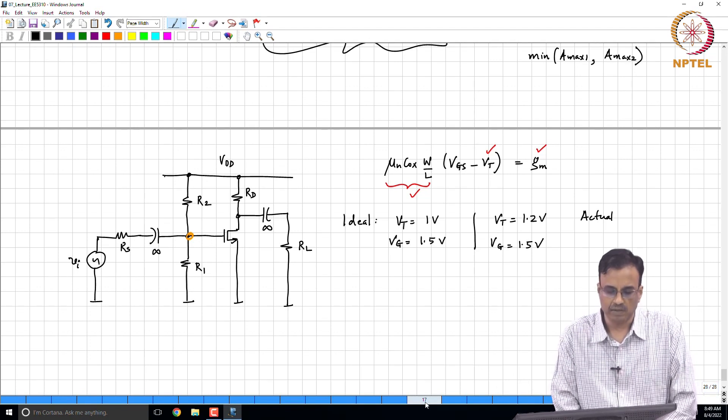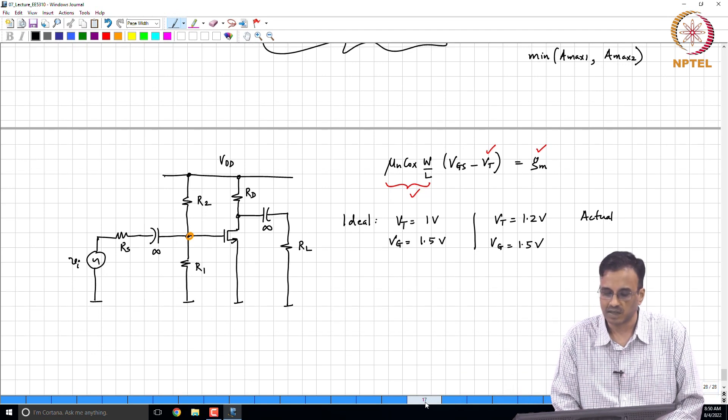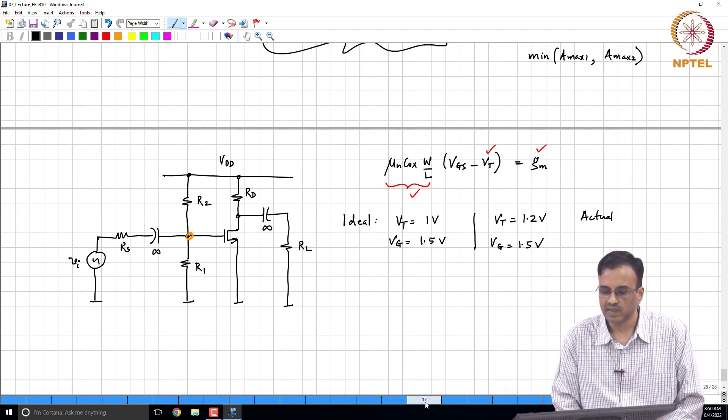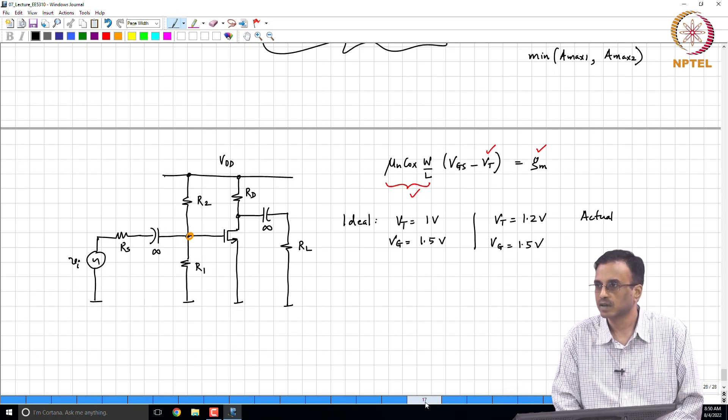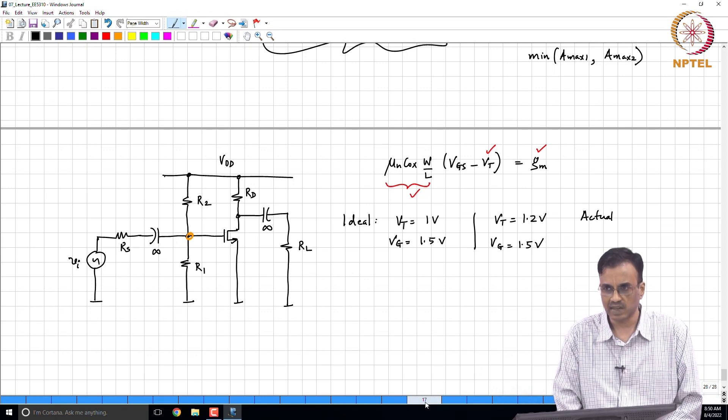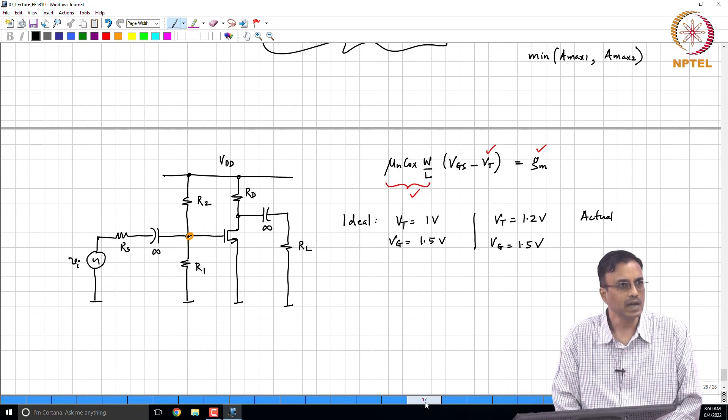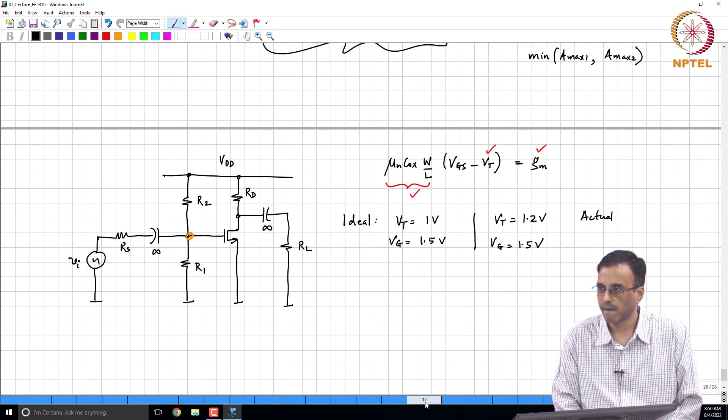So if the threshold voltage changes and the supply voltage changes, then you can see that what you thought should work will no longer work as intended, because the key problem is that the operating point of the transistor is completely modified.